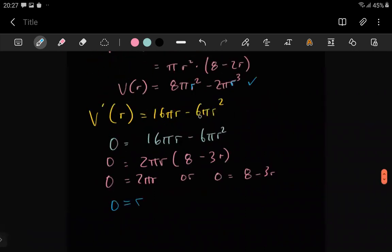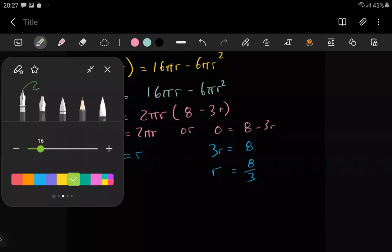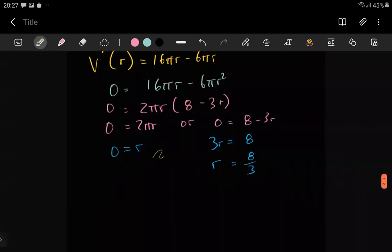Here if r is zero you have the lowest volume possible. Here though if you take the 3r to the other side divide both sides by 3, r is like 8 over 3. Clearly for you to have a maximum volume r has to be 8 over 3.